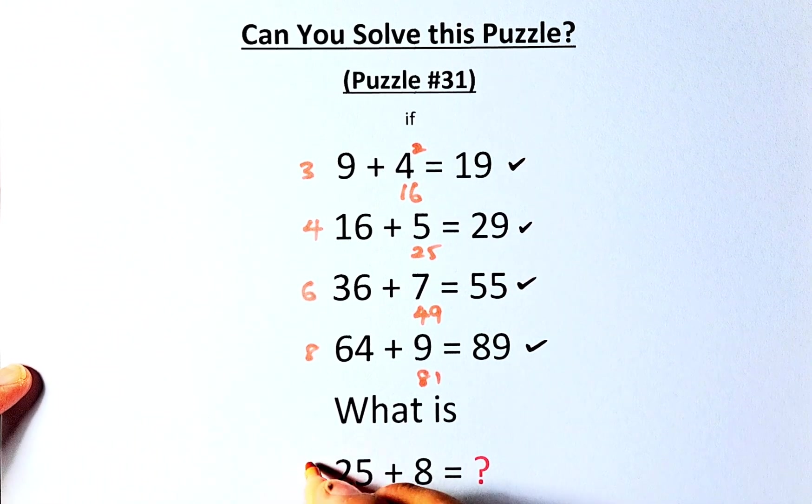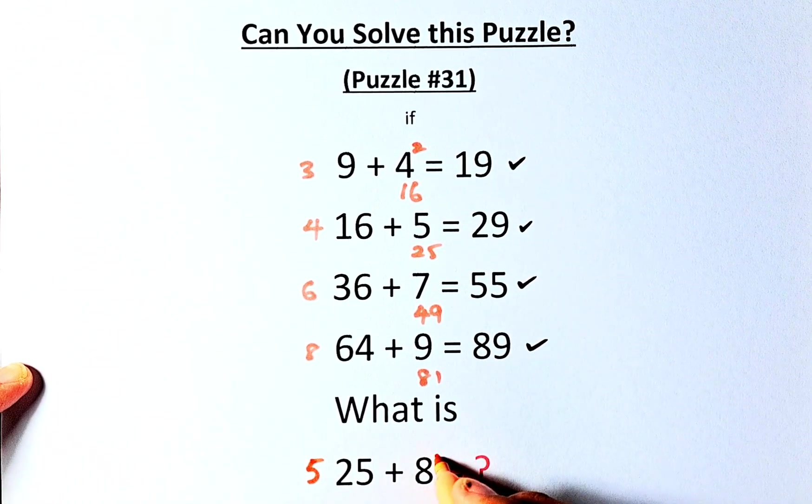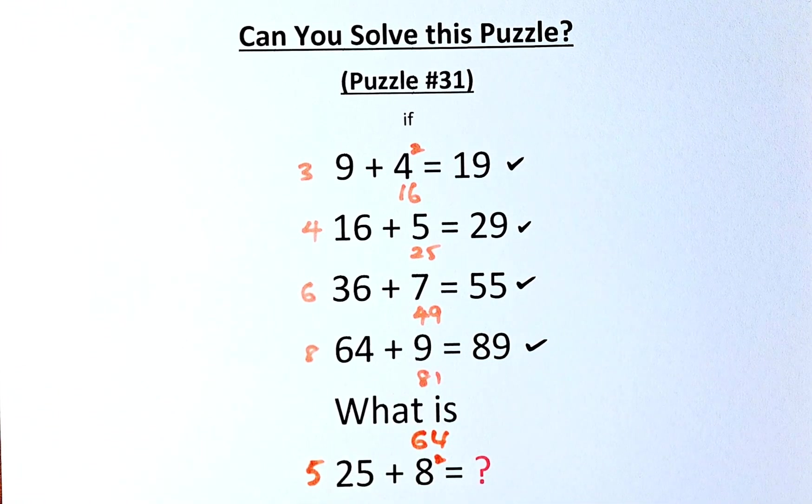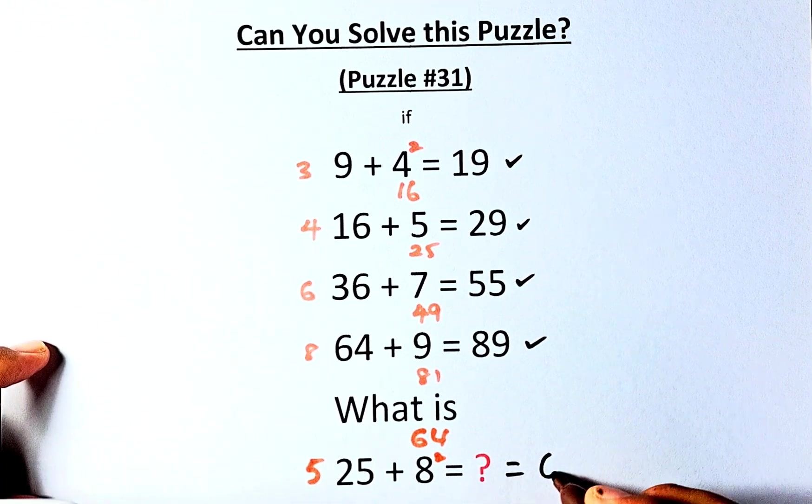So what is the solution to 25 plus 8? You square root of 25 is going to be 5, you square of 8 is going to be 64, so 5 plus 64 is everybody's favorite number, that is going to be 69.